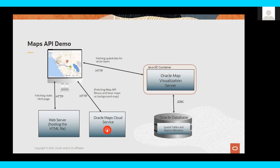This slide shows the architecture of today's demo. There is an HTML page that lives in a web server. Once it's loaded into the browser, it will access Oracle Maps Cloud Service to get the background maps — these are map tile layers, we use the terms interchangeably. The page also accesses the Map Visualization Server to get the line layer and polygon layer, and the Map Visualization Server connects to Oracle Database to get the data.